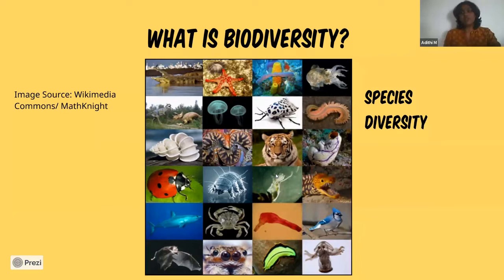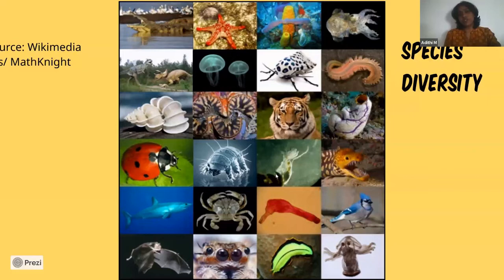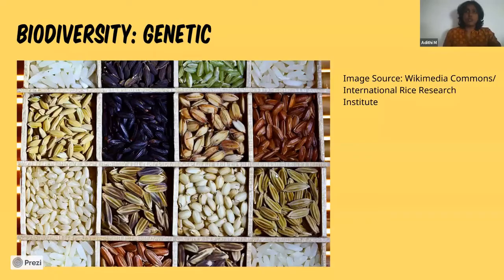Diversity can also be spoken of in terms of genetic diversity — basically the differences in genetic material, which can occur even within a species. For example, on the slide you can see different rice varieties. We actually have thousands of varieties of rice, and they differ in how they look, how they smell, and how they taste, because of the sheer genetic variation within that one species.